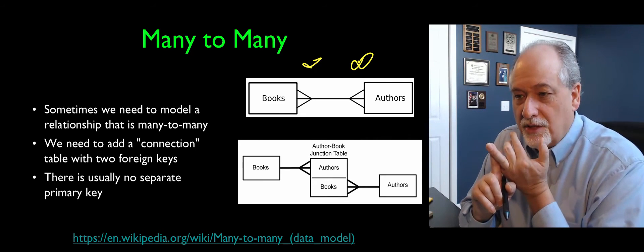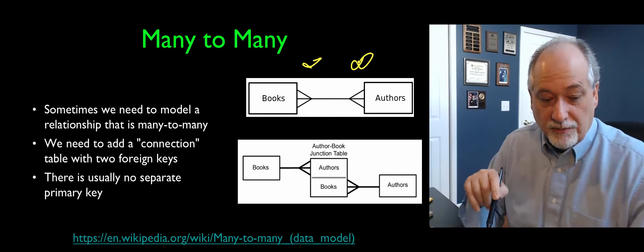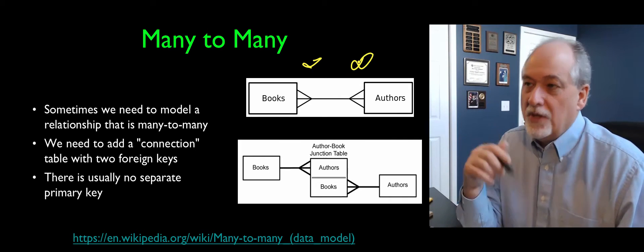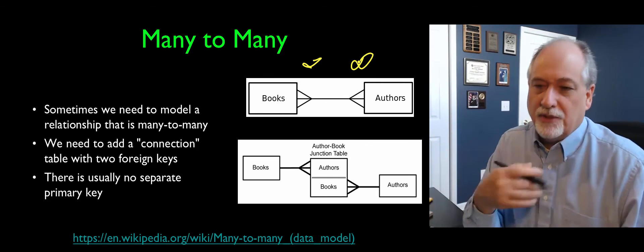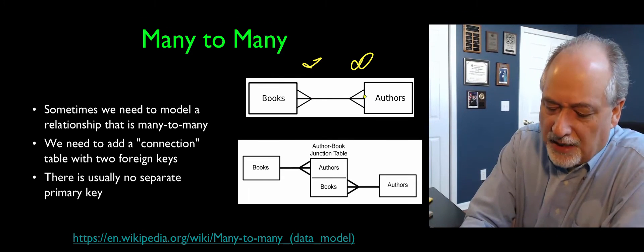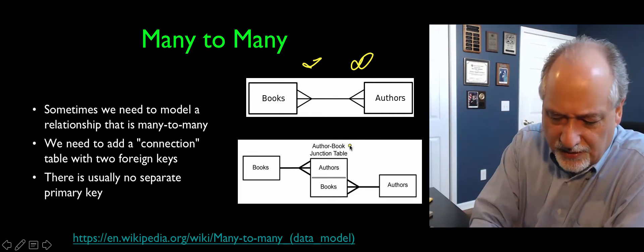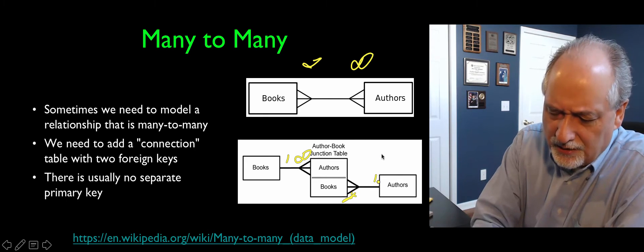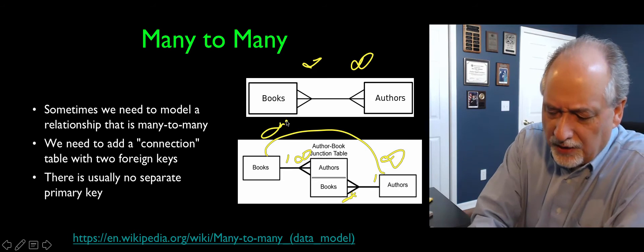There is no way with a single table to represent this. You can't take one table pointing to another table directly. So we end up with a table in the middle — we call it a junction table, a join table, or a many-to-many table. We basically break the many-to-many relationship into two many-to-ones. One side is one, the middle is many, and back to many pointing to one.